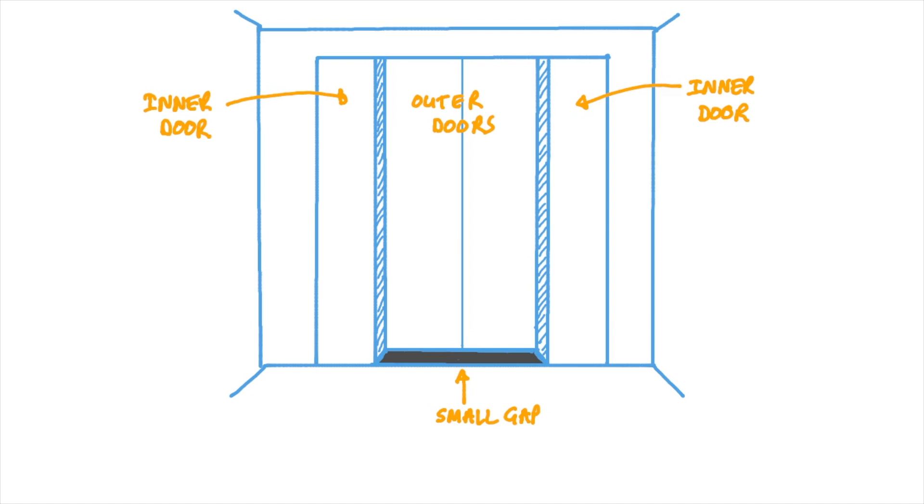After a while, conversation dried up and I spotted there was a tiny gap between the two open doors below, which was the drop to the bottom of the lift shaft. I suggested that if we dropped a penny through the gap and counted how many seconds it took to hit the ground, we could use one of Sir Isaac Newton's equations of motion under constant acceleration to work out how high up we were.